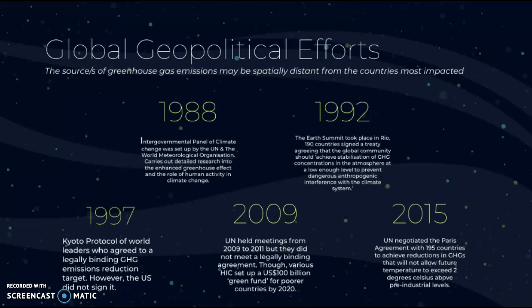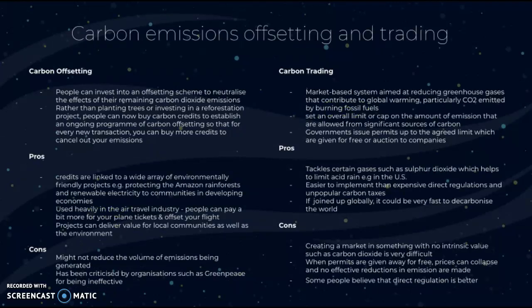Now we're going to look at carbon emissions offsetting and trading. Carbon offsetting is where people can invest into an offsetting scheme to neutralize the effects of their remaining carbon dioxide emissions. Rather than planting trees or investing in a reforestation project, people can now buy carbon credits to establish an ongoing program of carbon offsetting, so that for every new transaction you can buy more credits to cancel out your emissions.